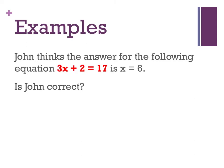John, on the other hand, thinks the answer for the following equation 3x plus 2 equals 17 is x equals 6. Again, we need to check if John is correct. So let's go in and have a little bit of a look. I know that it's saying that all of this on the left-hand side is equal to all of that on the right-hand side. And if John has got the right answer, I should come up with 17 equals 17. So let's have a look.